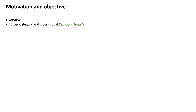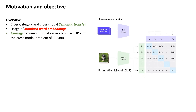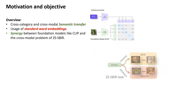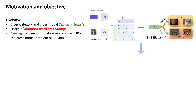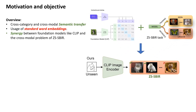Compared to other areas in zero-shot literature, semantic transfer in ZS-SBIR has remained rather rudimentary, mostly using standard word embeddings. In this paper, we fast-track research to be aligned with the status quo of the zero-shot literature and for the first time propose a synergy between foundation models like CLIP and the cross-modal problem of ZS-SBIR.